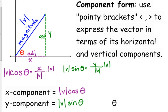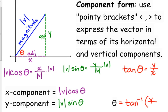In some cases, we are told the components and asked to find the angle. If we're told the x and y components and want to find the angle, we can set up our tangent ratio, because the components are the opposite and adjacent sides. So tangent equals y over x. If we're solving for theta, we use the inverse tangent of y over x, and that will tell us the angle.